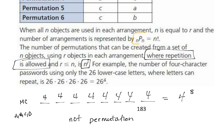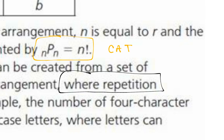NPN equals N factorial. For the word 'cat' with three letters and three blanks, it would be three, two, one — that's three factorial, and the same as 3P3. If you have N distinct objects and you permutate them N at a time, it's just N factorial. So 3P3, 4P4, 5P5 — it's just the same number factorial.